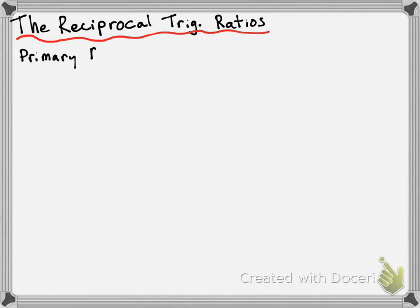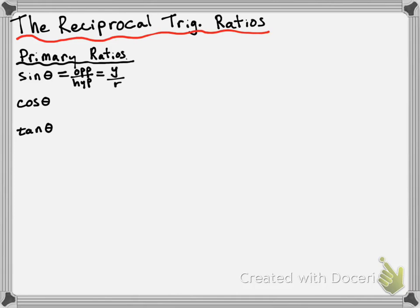You guys probably remember the primary ratios from last year: sine of theta, cosine of theta, and tangent of theta. Sine of theta can be expressed as opposite over hypotenuse on a right triangle, or as y over r on a Cartesian plane. Cosine of theta is adjacent over hypotenuse, or x over r. Tangent of theta is opposite over adjacent, or y over x. These are the three primary trigonometric ratios.